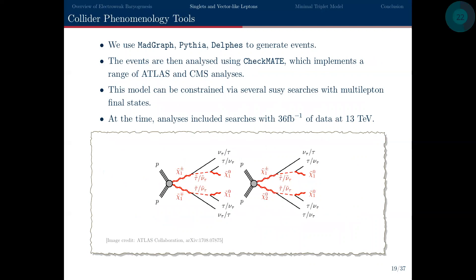These decay chains result in collider signatures with many tau leptons. Existing ATLAS and CMS searches look for multi-lepton signatures. To evaluate constraints on our model, we use MadGraph, Pythia, and Delphes — the standard collider tools — to generate Monte Carlo events, and then use CheckMate to examine the constraints. CheckMate implements existing ATLAS and CMS searches, applies the same cuts to our Monte Carlo events, and compares the expected number of events to the observed number. Note that at the time this paper was written during my PhD, only searches with 36 inverse femtobarns of data were included; there are now newer searches with up to 139 inverse femtobarns.